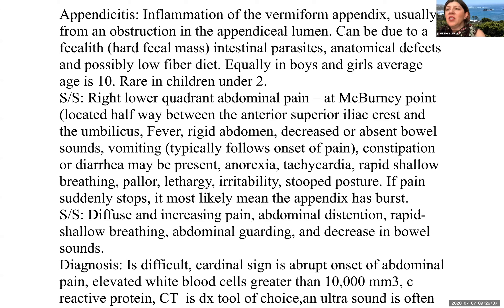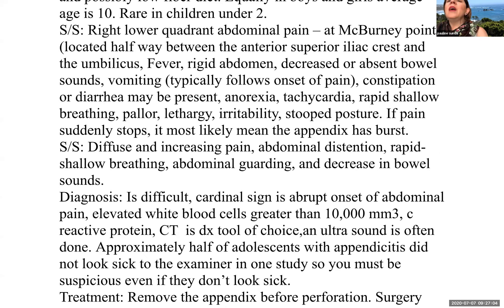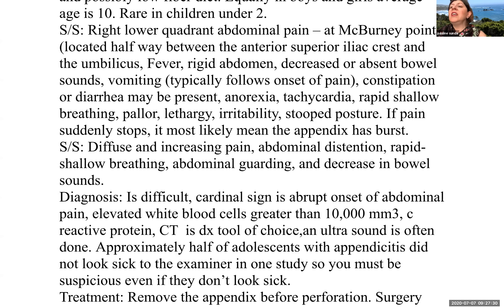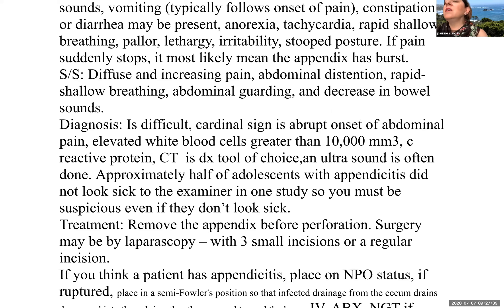Appendicitis is an inflammation of the vermiform appendix, typically from some obstruction in the appendiceal lumen. This can be due to a fecalith, intestinal parasites, anatomical defects, and even a low-fiber diet. It occurs equally in boys and girls; average age is about 10, and it is very rarely seen in children under two. Signs and symptoms typically include pain in the right lower quadrant at McBurney's point — halfway between the anterior superior iliac crest and the umbilicus — fever, rigid abdomen, decreased or absent bowel sounds, vomiting following the onset of pain, constipation or diarrhea, anorexia, tachycardia, rapid shallow breathing, pallor, lethargy, irritability, and guarded posture. If the pain suddenly stops, it most likely means the appendix has burst.